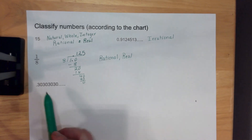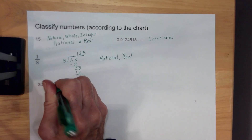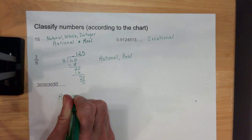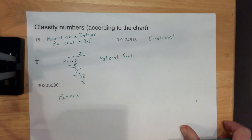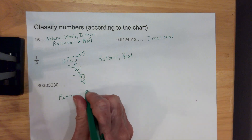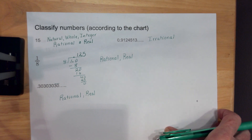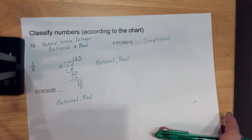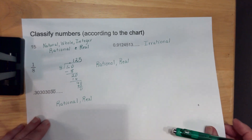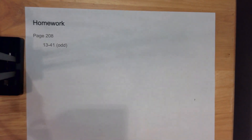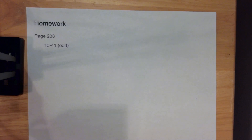Now if I have this one, notice that it repeats, so this is a rational number. If it's rational, all of these we talk about are real. It won't be until Algebra 2 probably that we really study imaginary numbers. Your homework for this section is page 208, problems 13 through 41 odd.